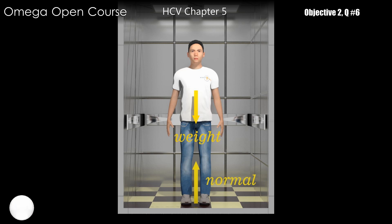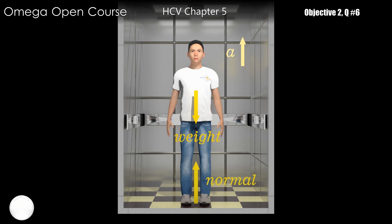This means a net upward force acts on the person. But if the net force is in the upward direction, the acceleration of the person must be in the upward direction. So whichever options give upward acceleration are our answers.